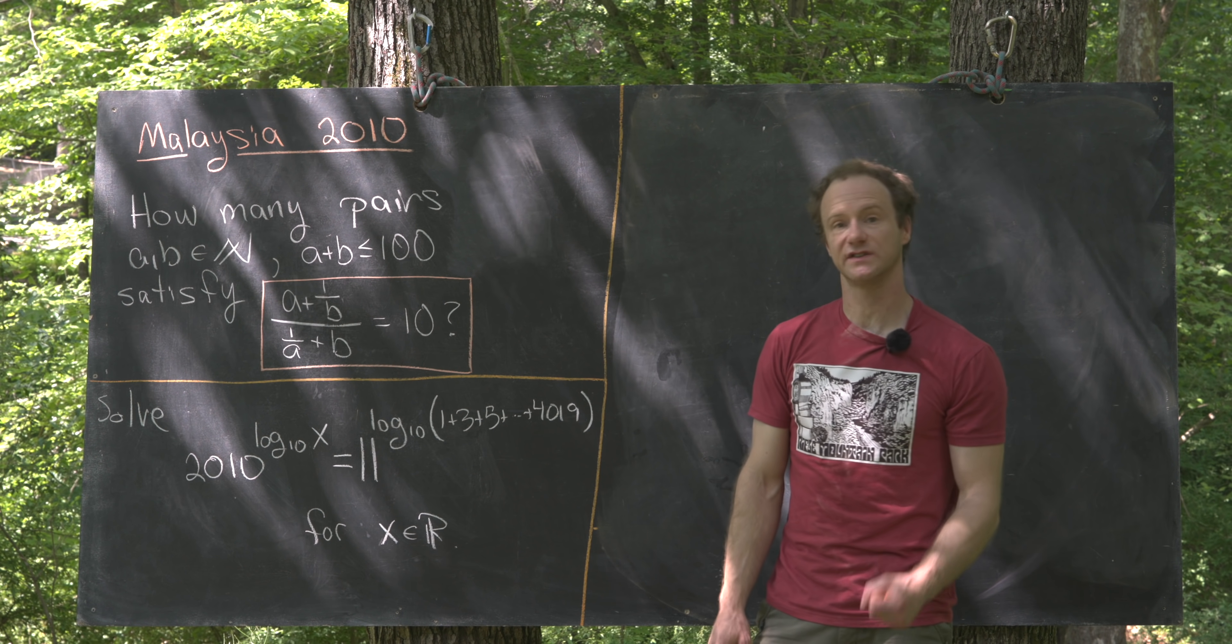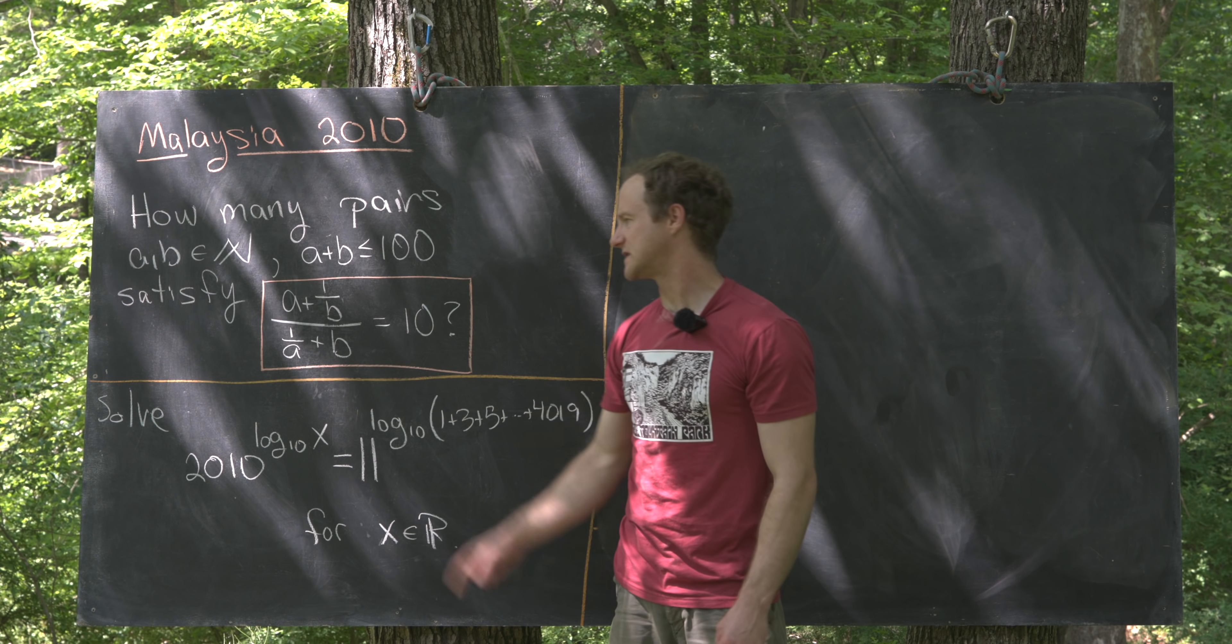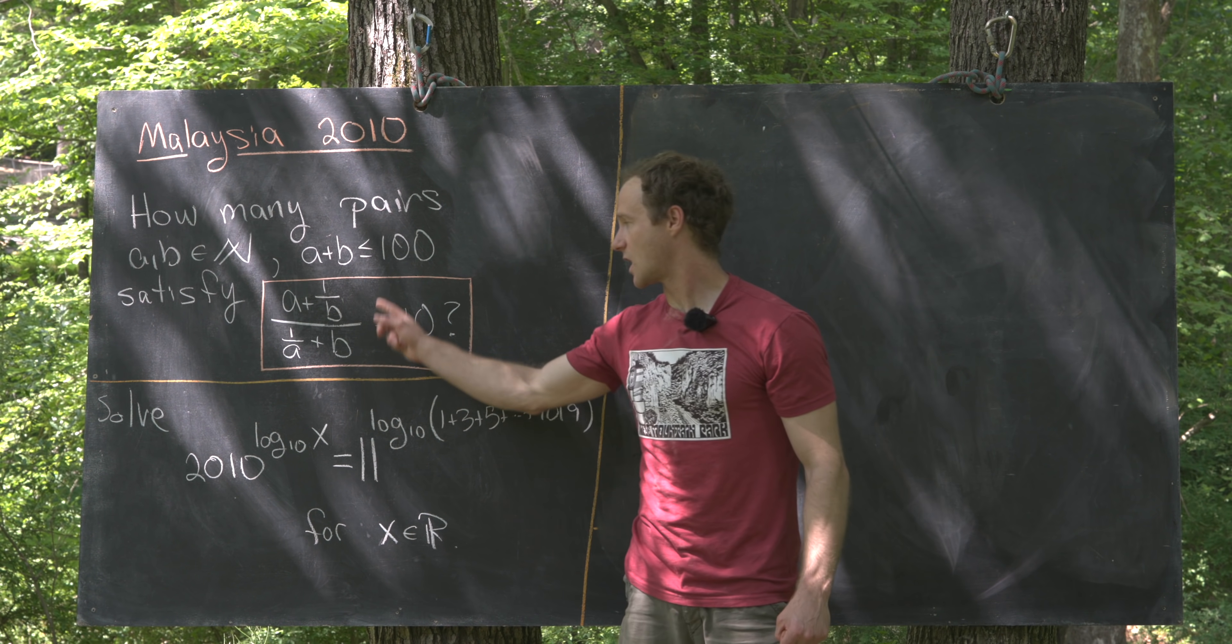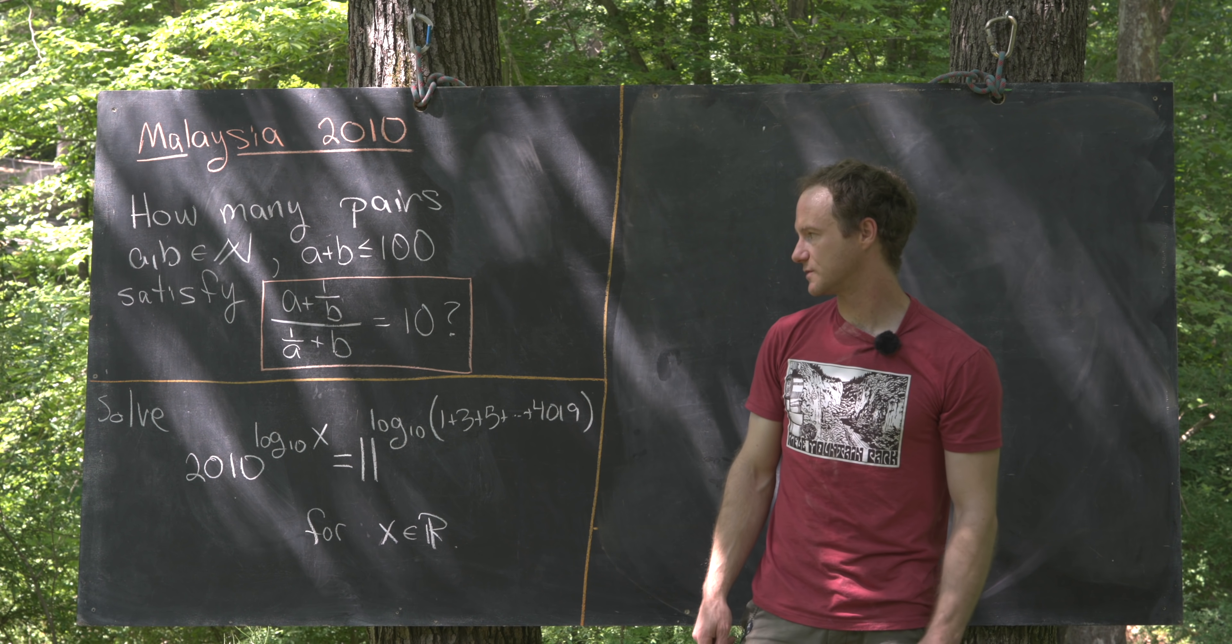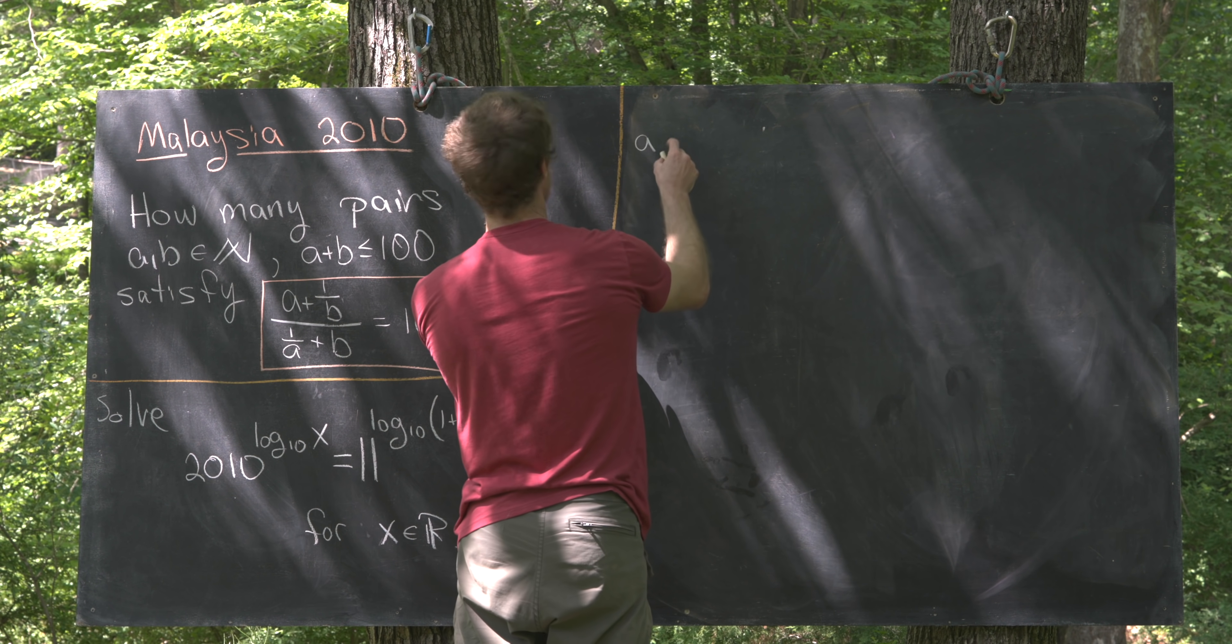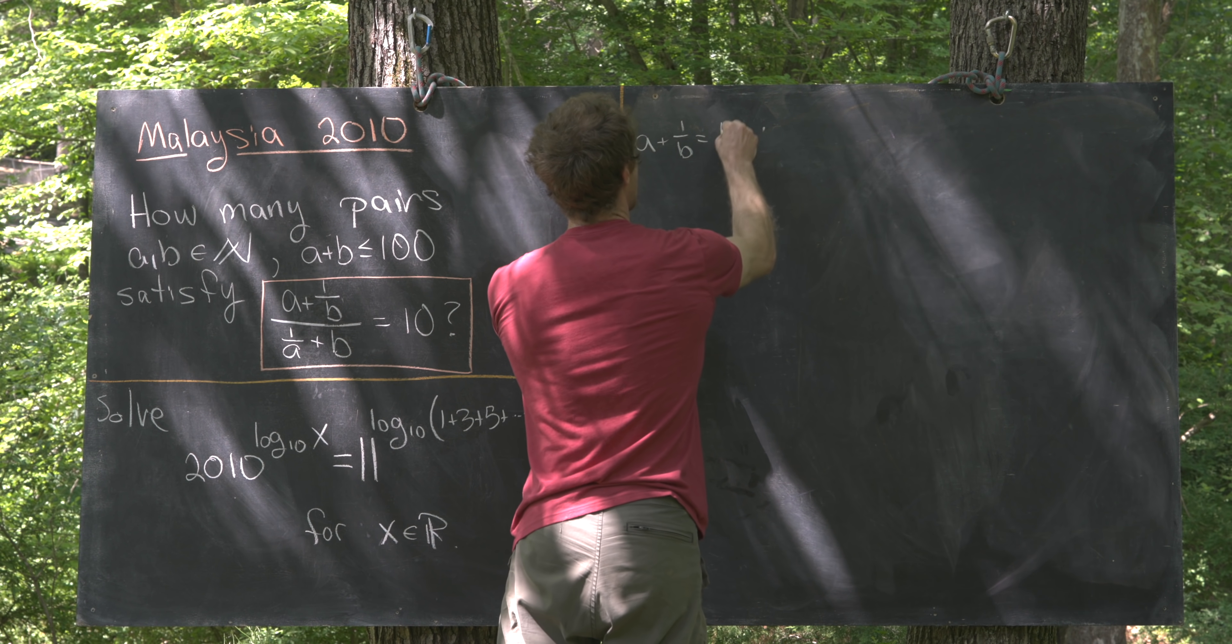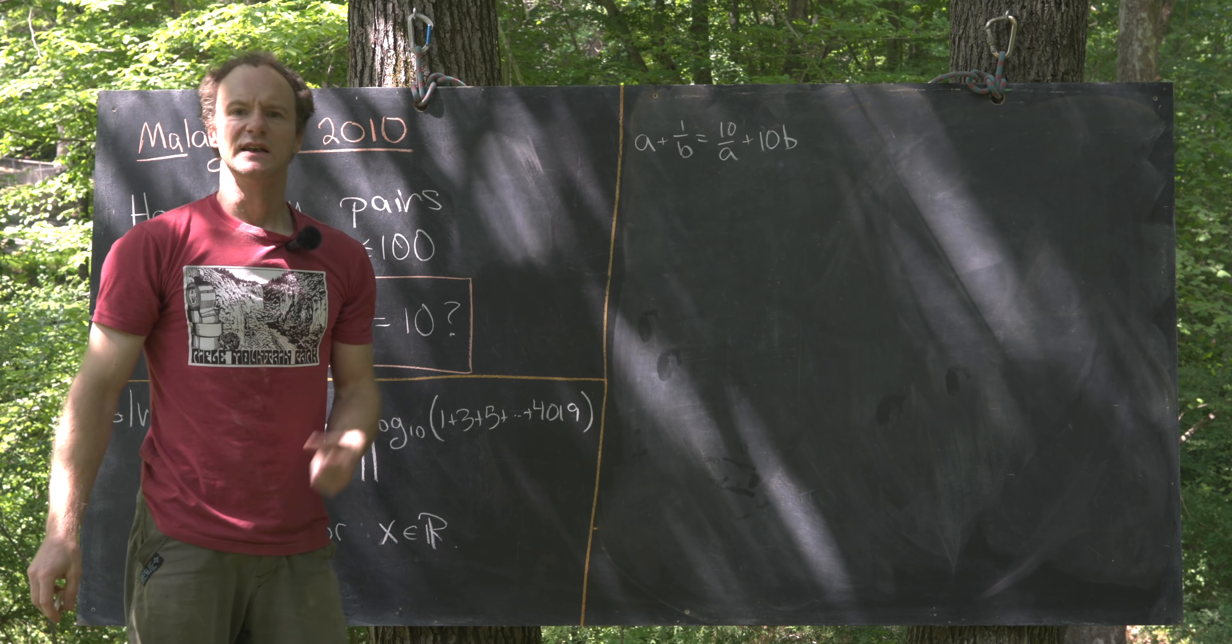Given this second condition, which is obviously an equation, we would probably like to make it a little bit simpler by multiplying by something so that this complicated fraction on the left hand side is a little bit more manageable. We can do that by multiplying by the denominator, and that will straight away give us A plus 1 over B is equal to 10 over A plus 10B.